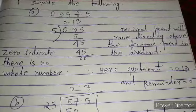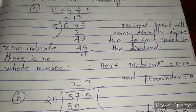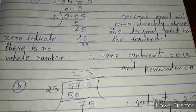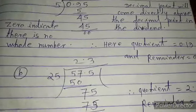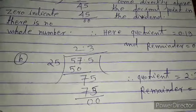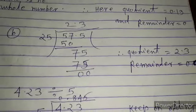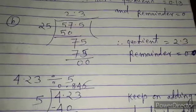When we divide 57.5 by 25, the quotient is 2.3 and the remainder is 0.